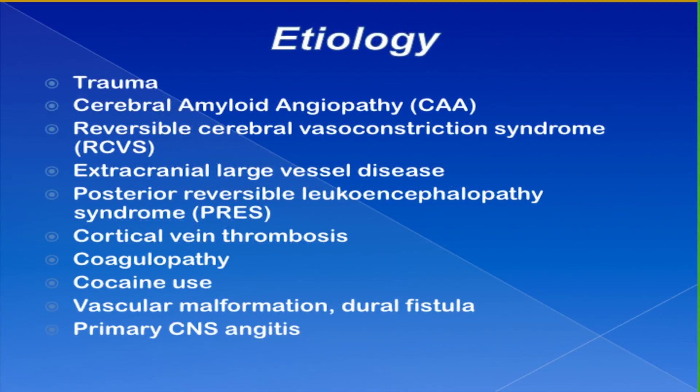Regarding etiology — I'm not going to talk much about trauma since that is often apparent. I'll focus primarily on the top three conditions that comprise most etiologies: amyloid angiopathy, reversible cerebral vasoconstriction syndrome, and the role of extracranial large vessel disease in generating a cortical subarachnoid hemorrhage. I'll also touch on a few other rare causes of convexity subarachnoid hemorrhage.